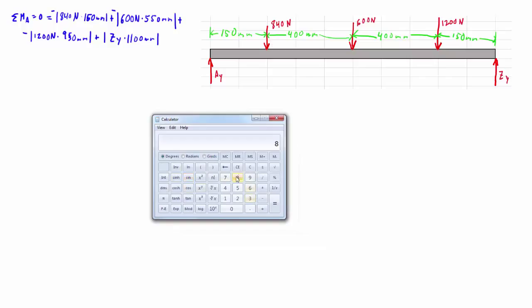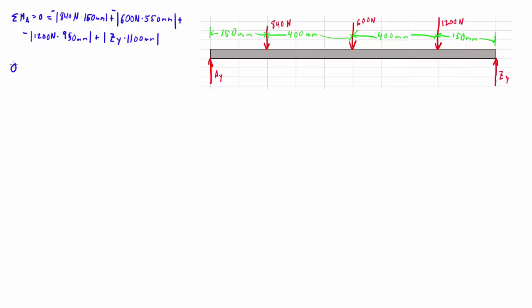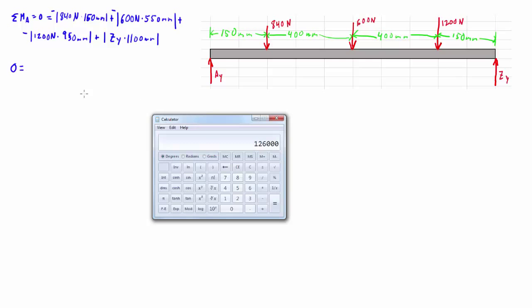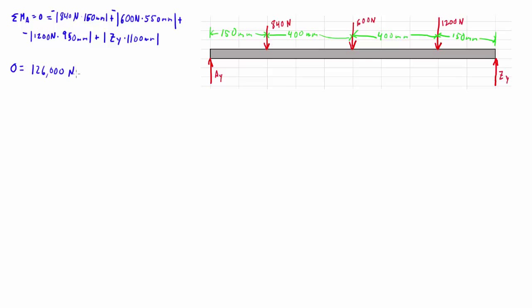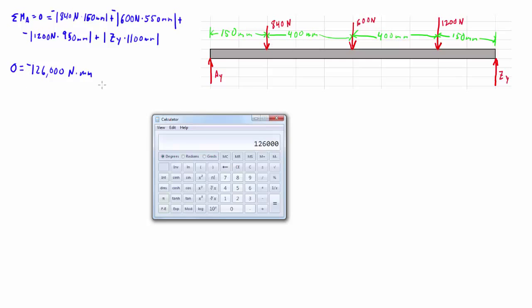So 840 times 150 equals 126,000 Newton millimeters, that's negative. Now some might want to translate this into something a little more manageable, but I'm going to keep it in millimeters because we'll want to do that for this whole problem, this video and the next ones.